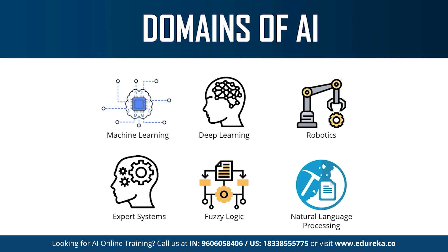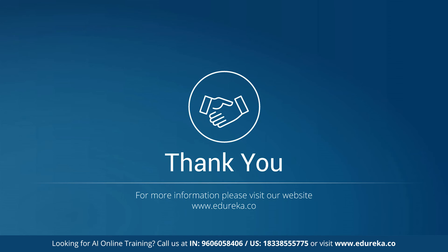Expert systems are AI-based computer systems that learn and replicate the decision-making ability of a human expert. They use if-then logic notions to solve complex problems and do not rely on conventional procedural programming. Expert systems are mainly used in information management, fraud detection, virus detection, and managing medical and hospital records. To sum it up, these were the different branches of artificial intelligence. AI is a vast field — if you want to learn more, links are in the description box. That's all for today — happy learning!